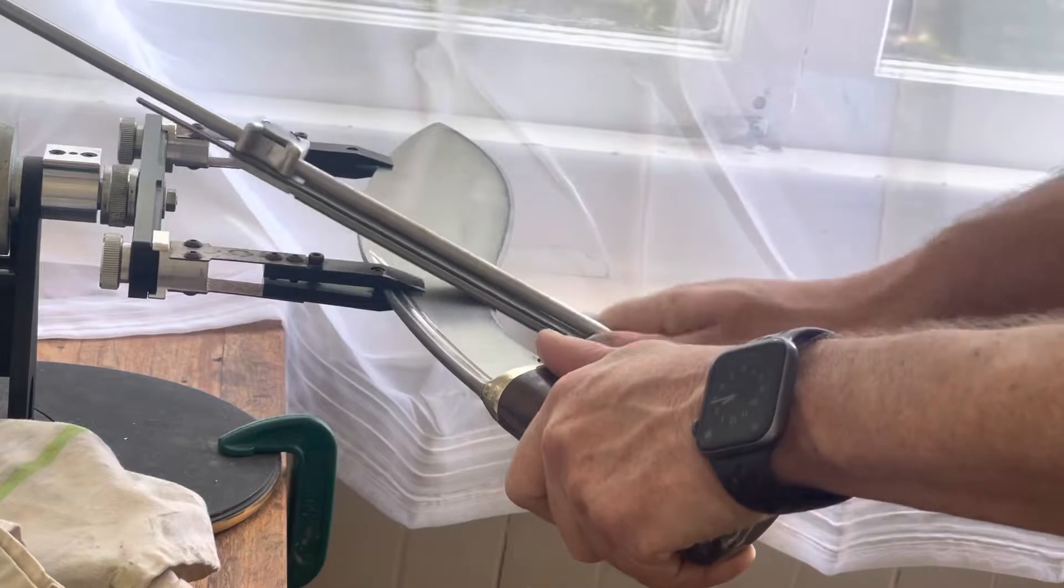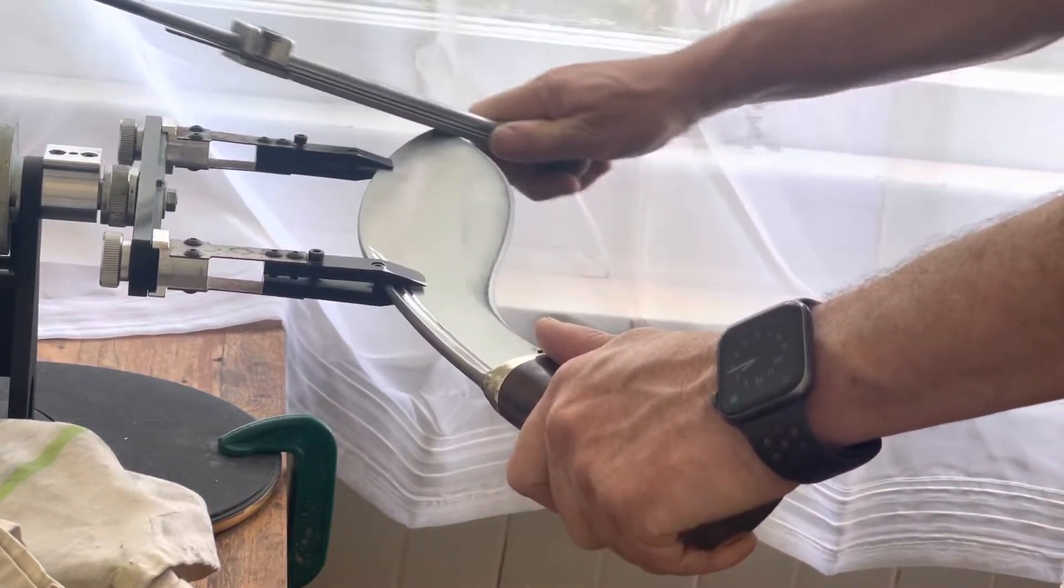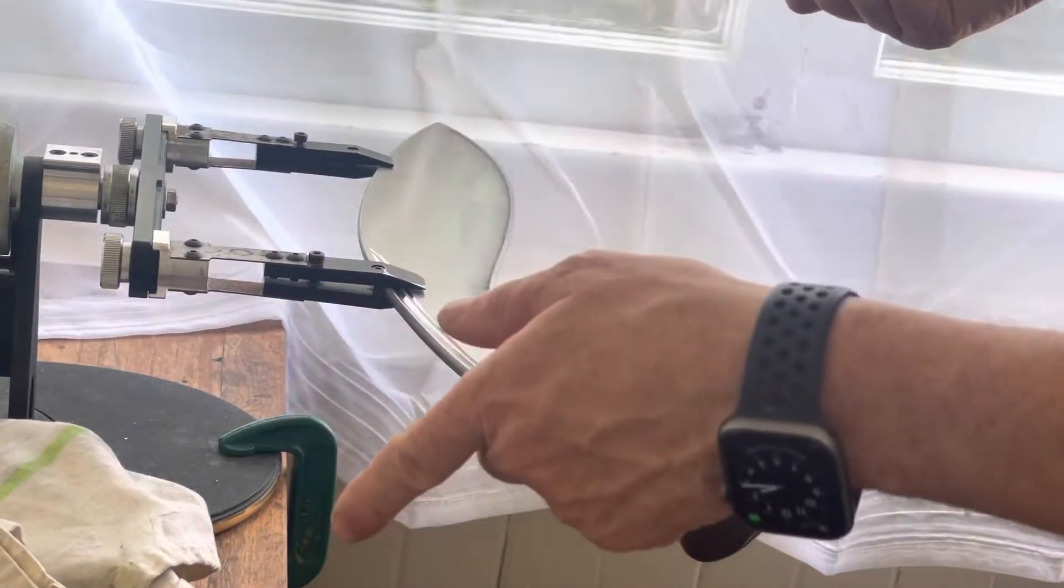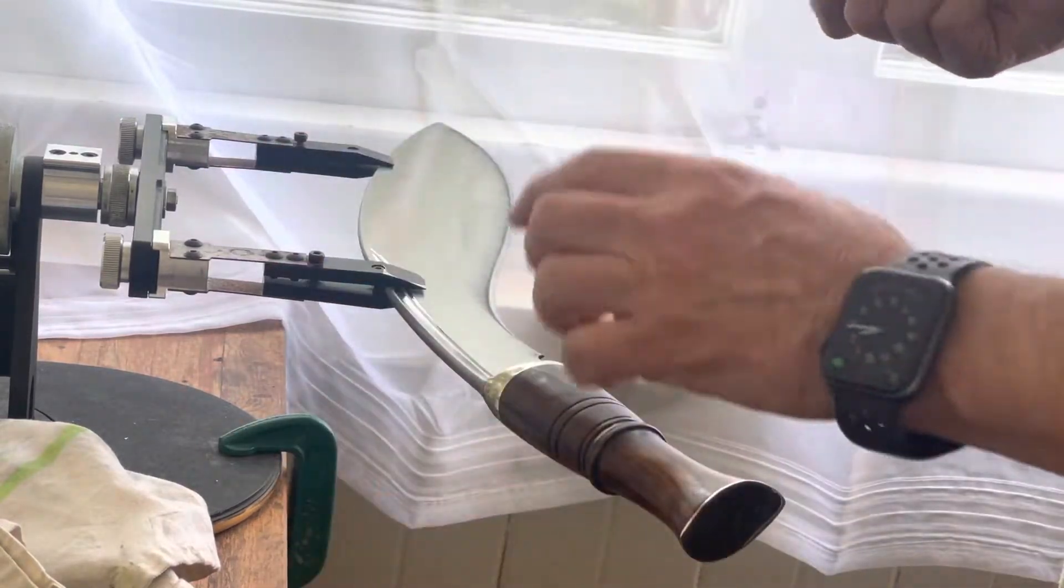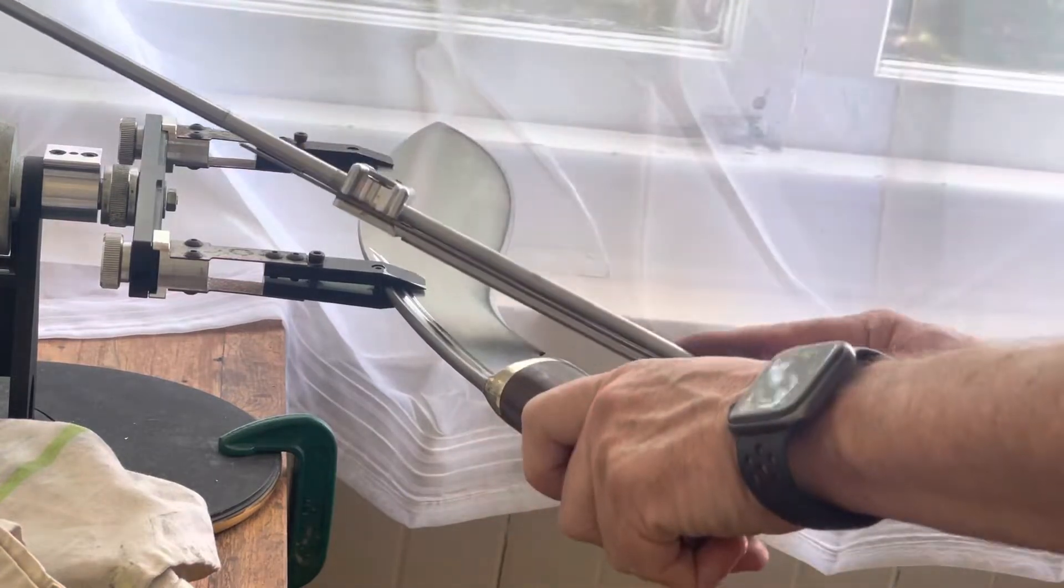140 grit, and then later on I'll go 400 grit, 600 grit, 1200 grit, 9 micron, 6 micron, 3 micron, finishing with 1 micron. At which point this rough finish will be a mirror polish.